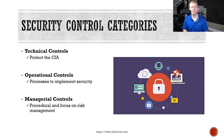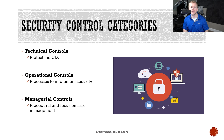Operational controls include the processes that we implement to manage various technologies in a secure manner. A few examples include vulnerability management and user access reviews. Managerial controls are procedural in nature and they focus on risk management. These controls can include periodic reviews, risk assessments, and project management practices.